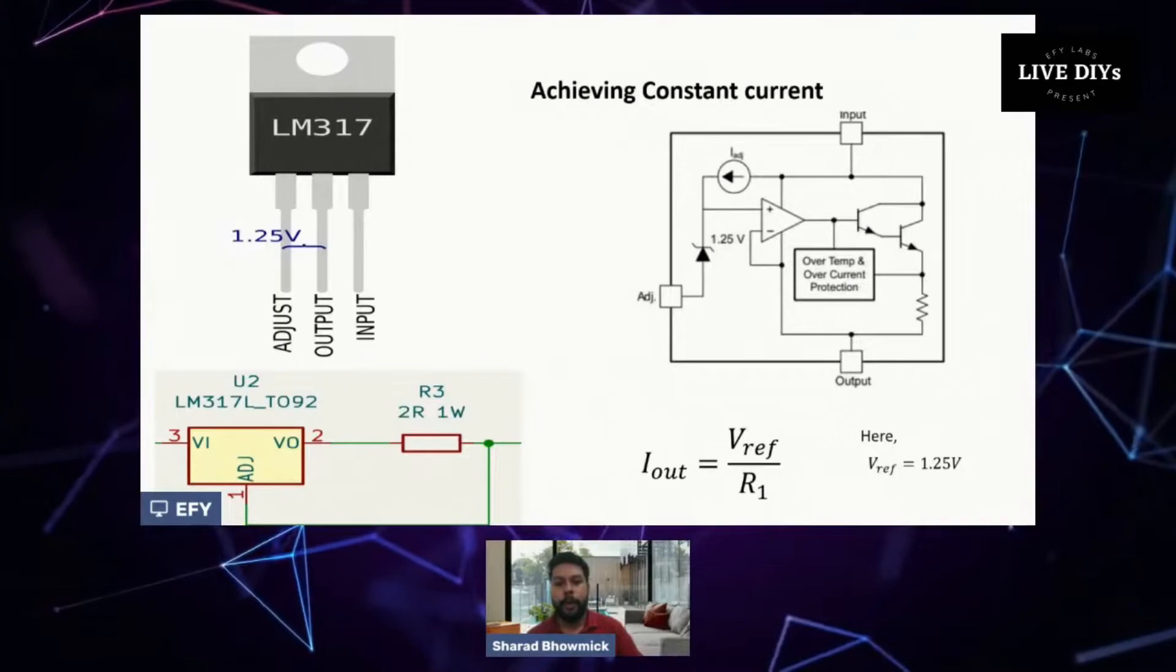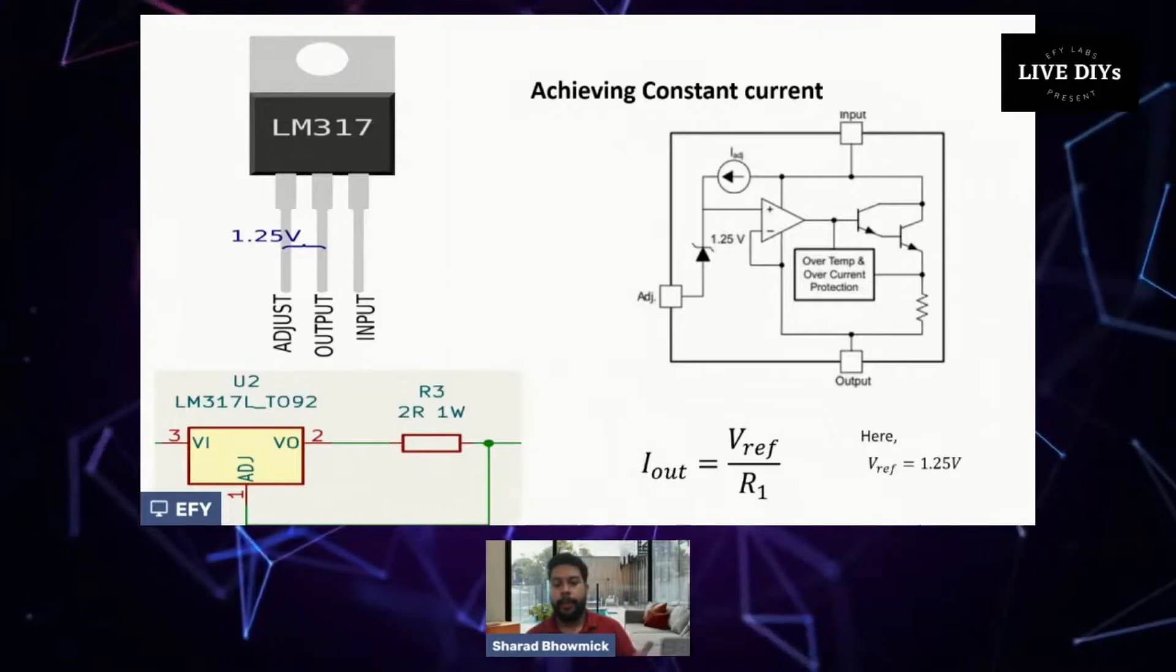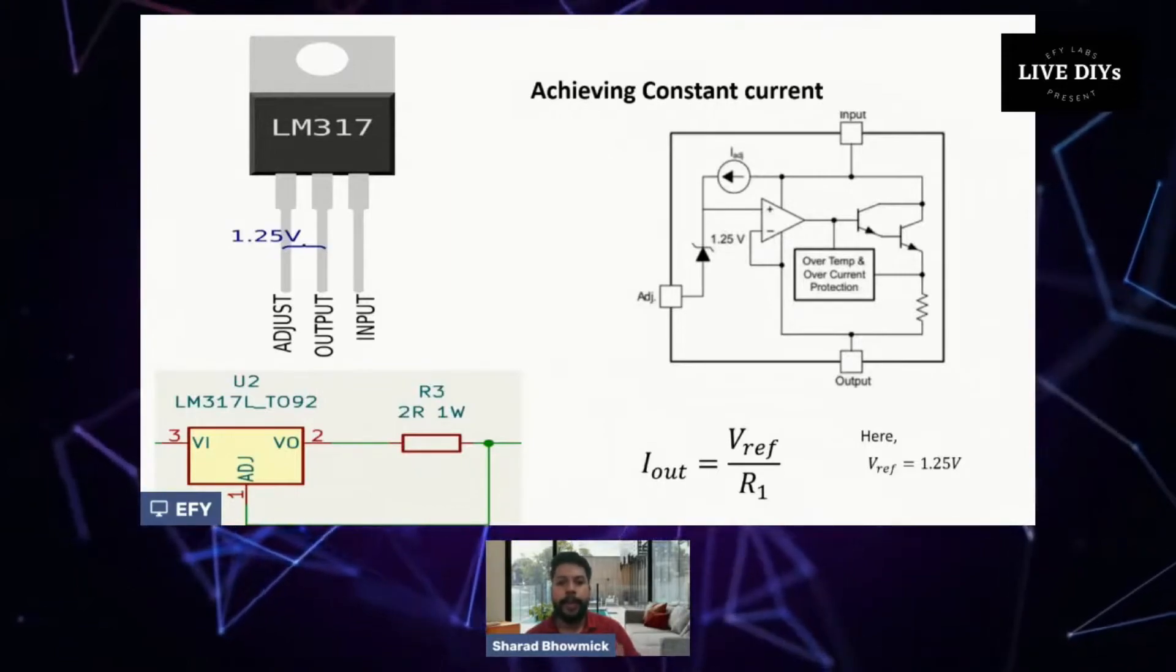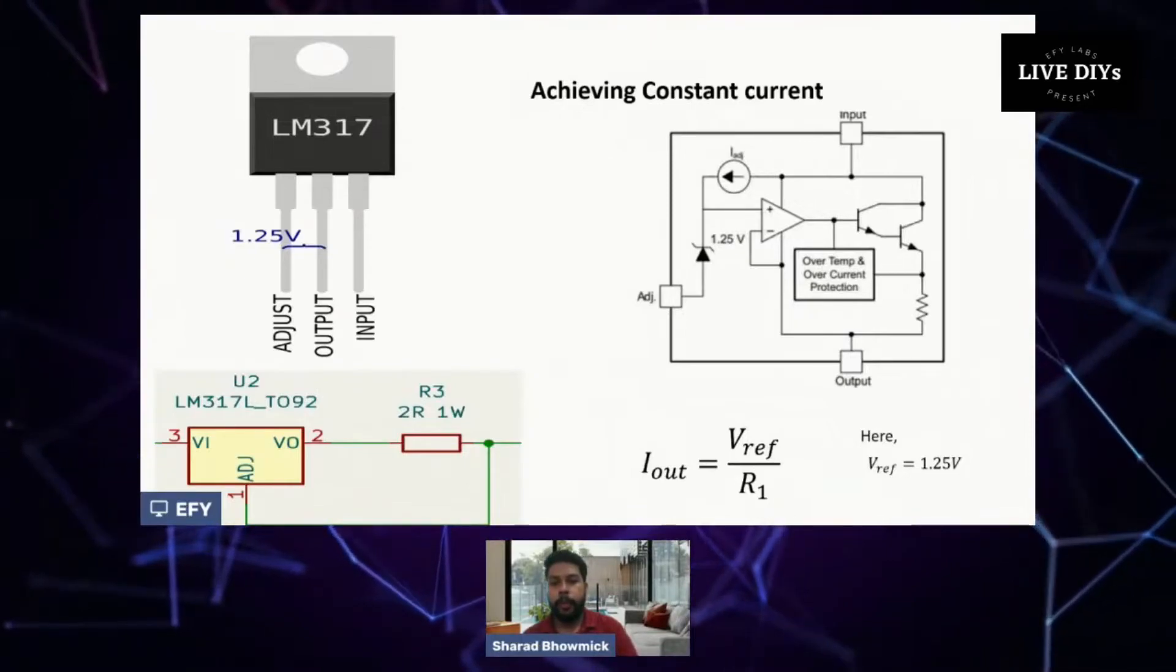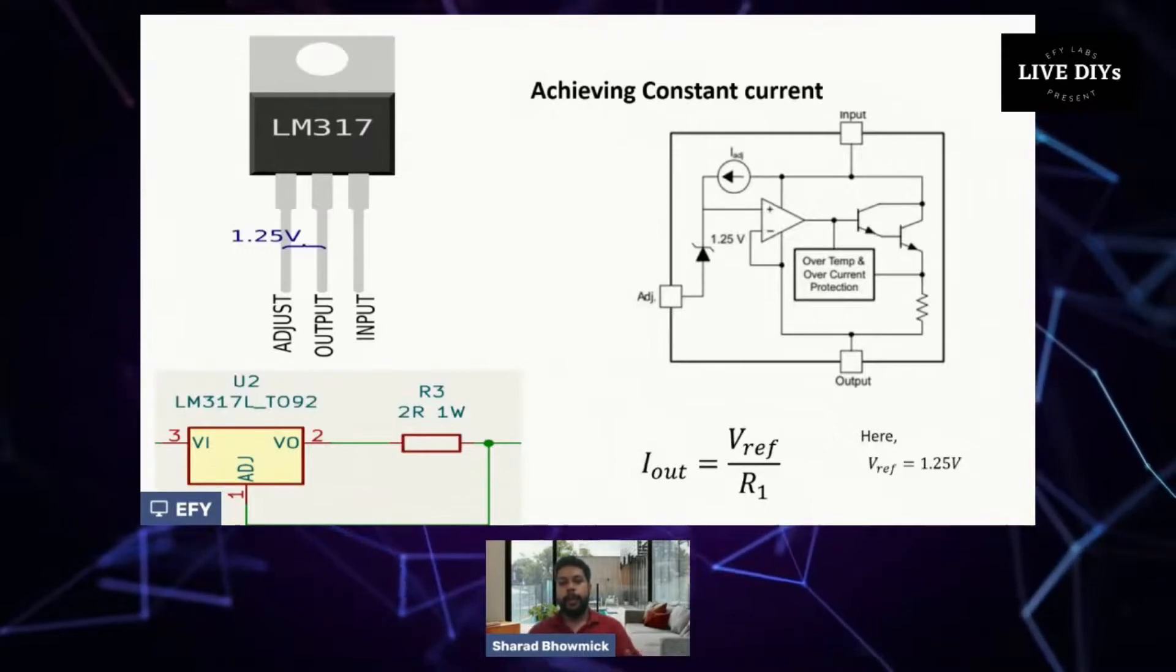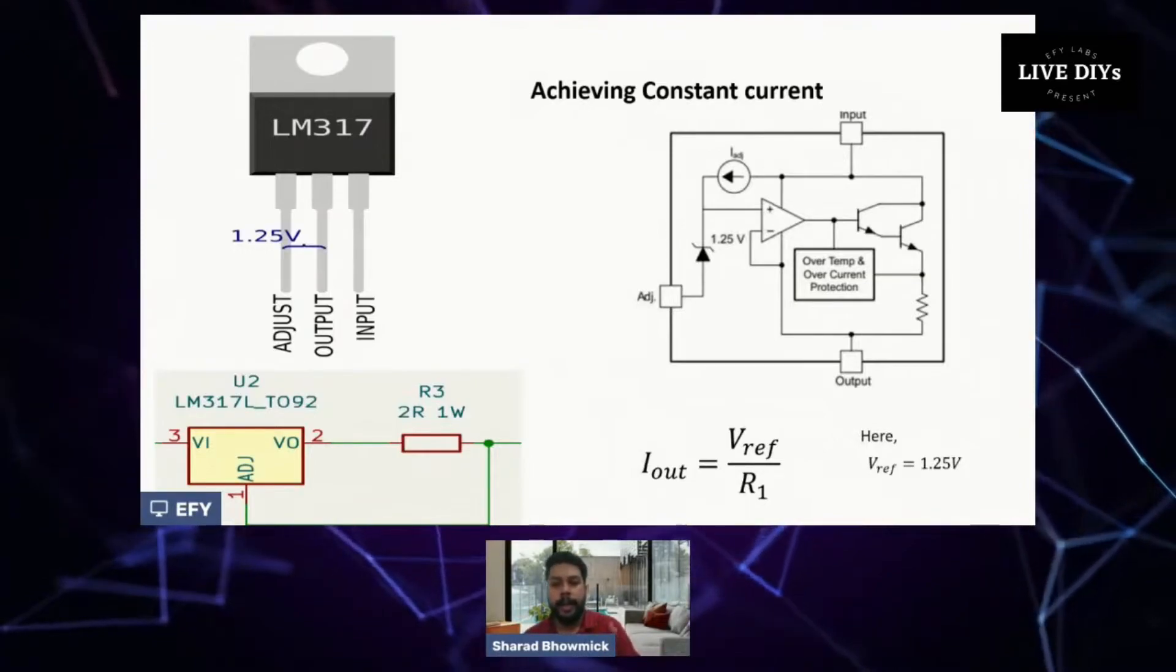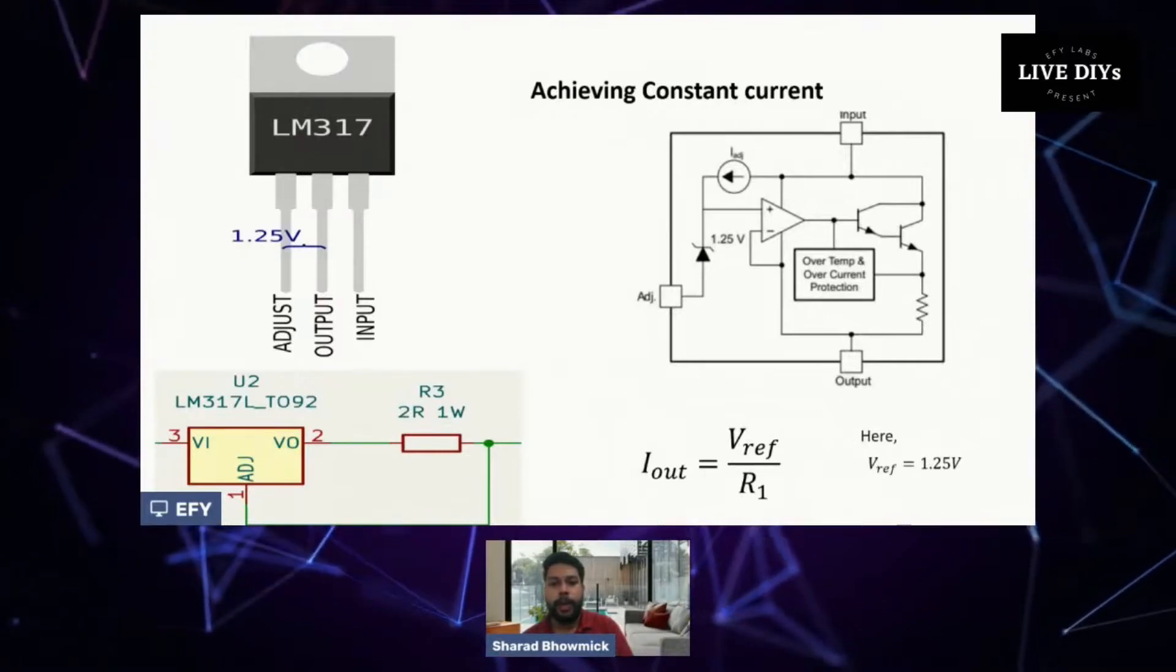Now we can control the current by using the formula Iout equals to Vref by R1. As you can see, R1 is basically denoted by R3 in the image on the left side. Vref for LM317 is 1.25 volts. So suppose if we want to charge the circuit with 1 amp of current, we have to allow 1 amp of current, then we'll keep the R1 or R3 in our case as 1.25 ohms.